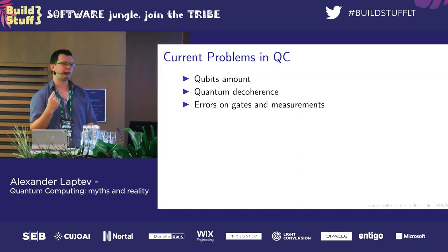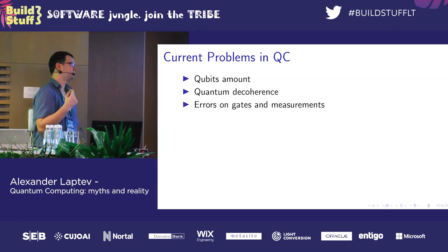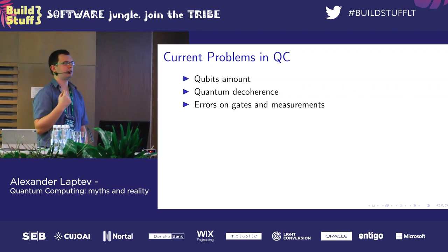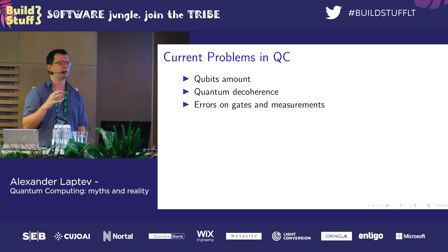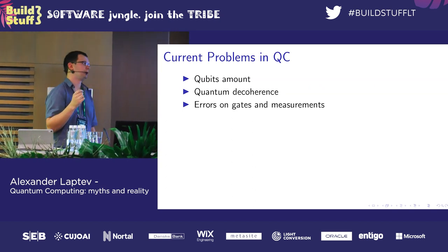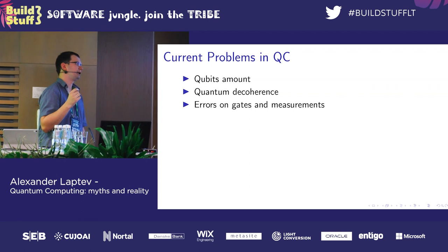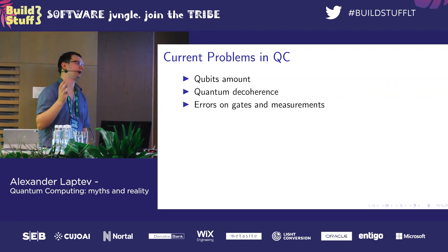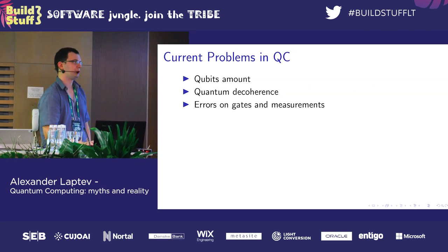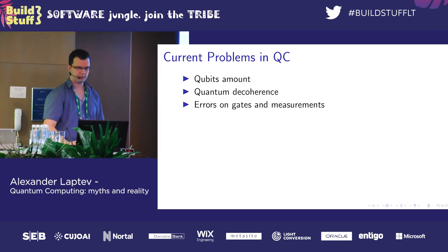IBM promised to double qubits every year, giving you 10 to 20 years for practical quantum computing. But since we actually need 100,000 qubits for error correction, add 15 more years — and practical usage is delayed by about 25 years.